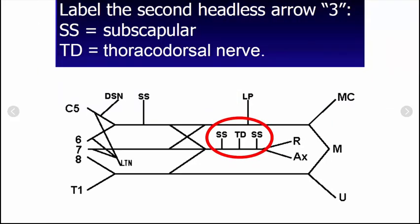Next, we're going to work a little bit on the posterior cord, which is this one. Let's label these arrows. There are these three headless arrows, and that is the SS for the subscapular, thoracodorsal, and actually upper subscapular, thoracodorsal, and lower subscapular. The thoracodorsal can actually also be called the middle subscapular nerve. Don't forget about that. Thoracodorsal goes to the latissimus dorsi.